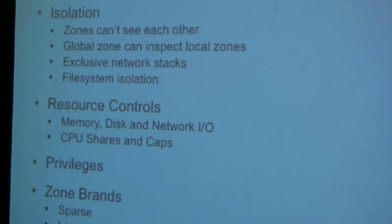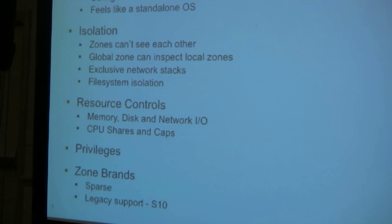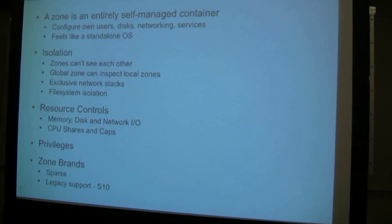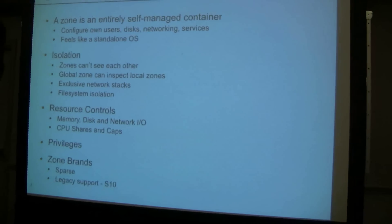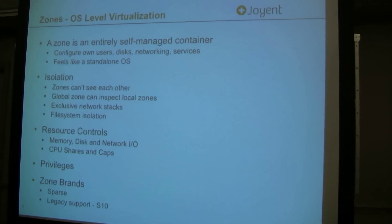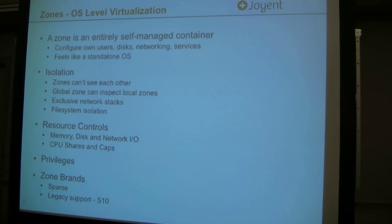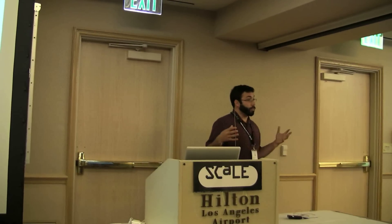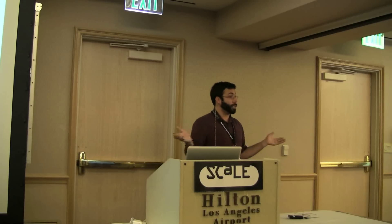So, what is a zone? A zone is basically a self-managed container. The idea is that you should be able to configure your own users, storage, networking, and all the different services you want to run — it should basically feel like a standalone operating system. The different containers don't know about each other, so you get the traditional system administration view. The global zone can see the existence of all other zones, but any other zone doesn't know that these other pieces exist.